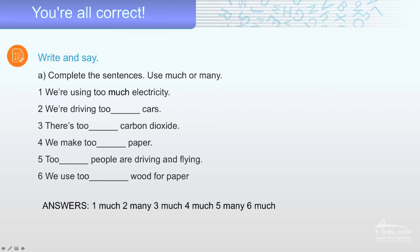One, of course, much. But two, many. Cars, countable. Much carbon dioxide. Number four. It's much. Too much paper. Number five, many. Too many people. Number six, much. Wood for paper. Too much wood for paper.